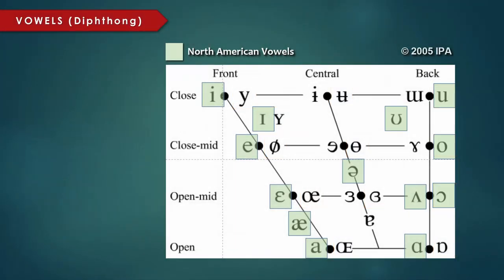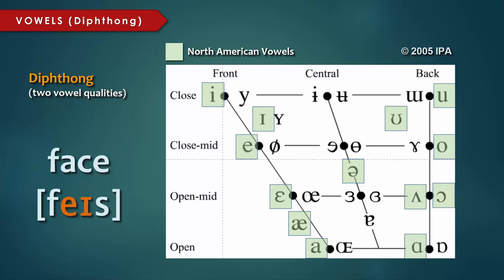Just a brief note on representing diphthong vowels. Remember that diphthongs involve two vowel qualities. So the diphthong A, as in face, starts out at A and ends at I.